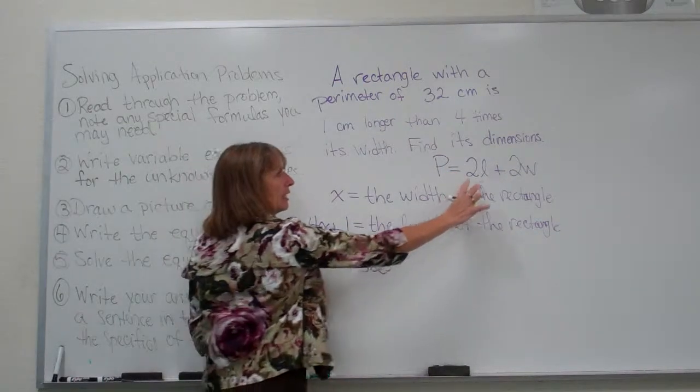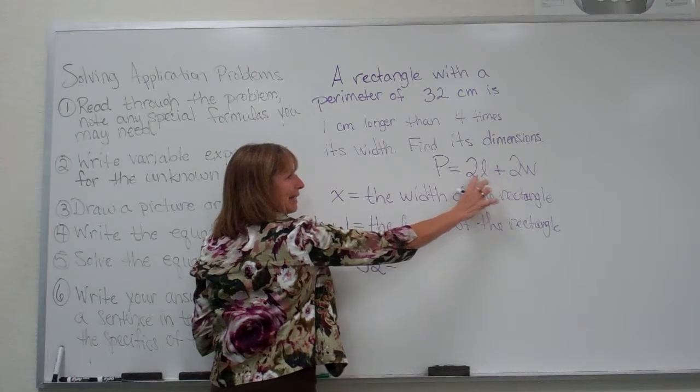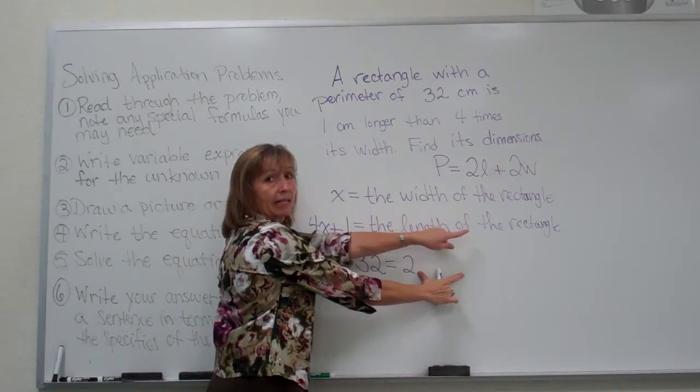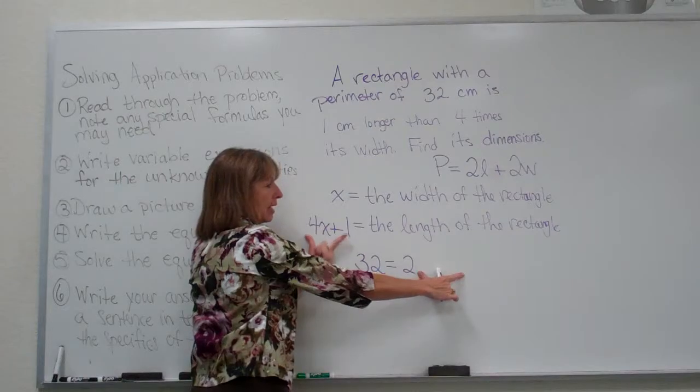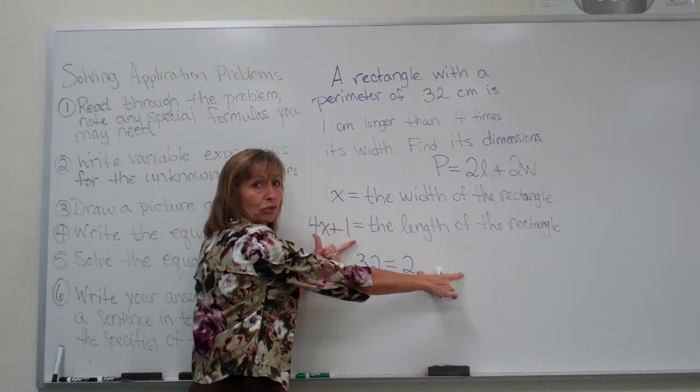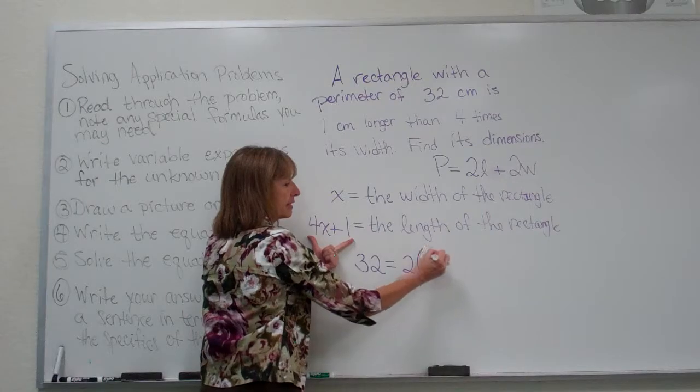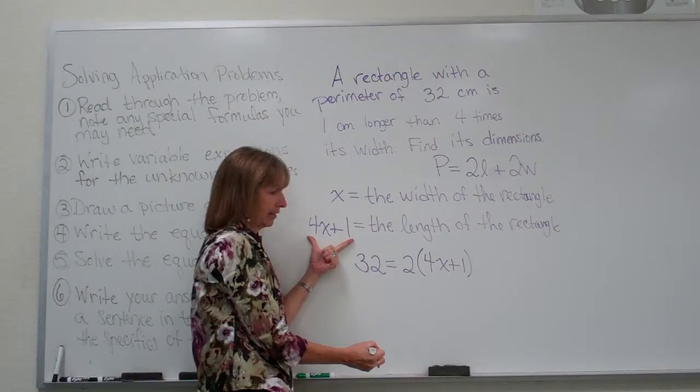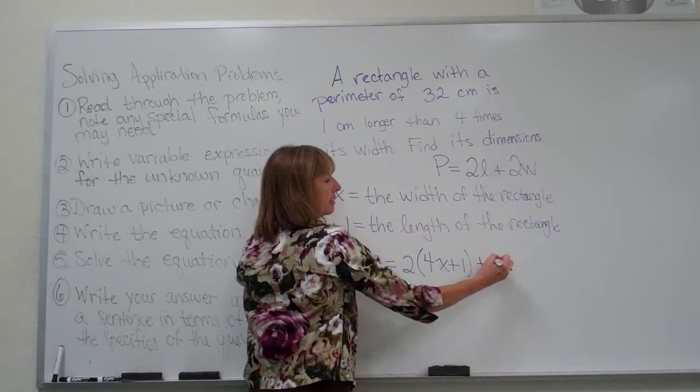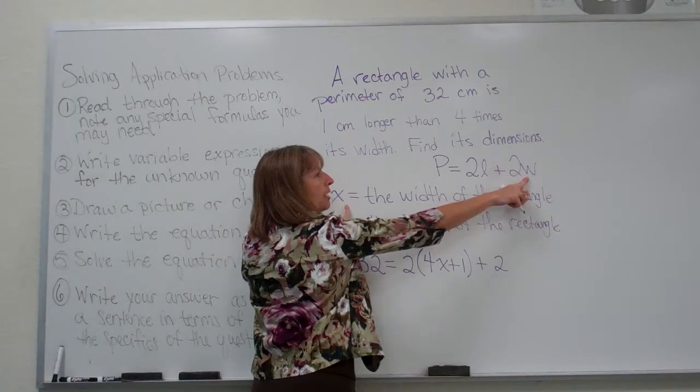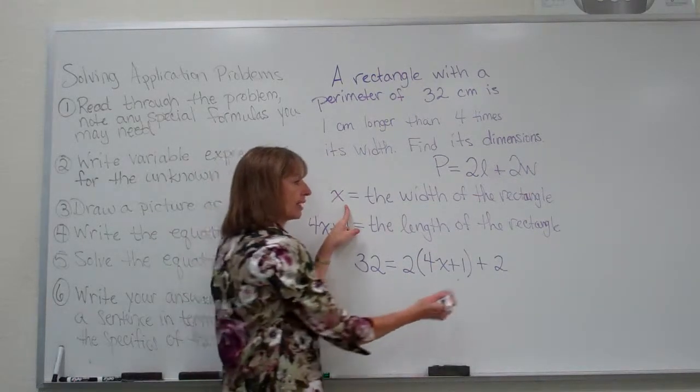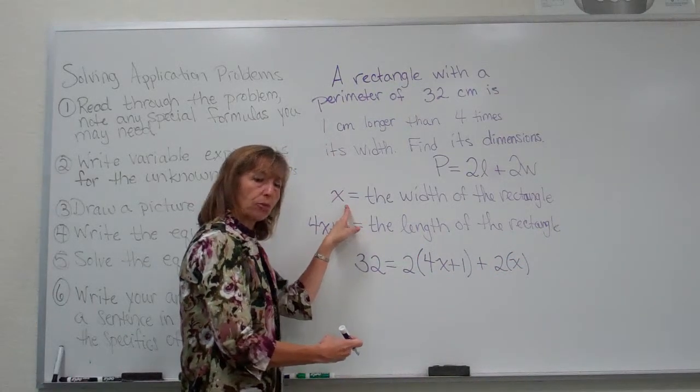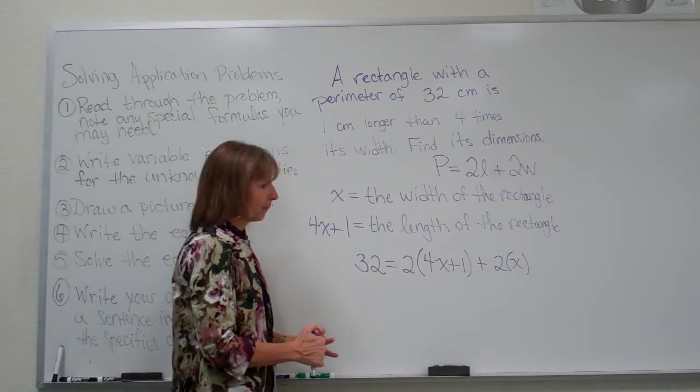Now this is two times the length. So I'm going to write my two. And I'm going to multiply it to the expression of the length that is specific to this problem. But my expression for the length has two terms. So I need to grab that in parentheses to make sure that I apply it to the full expression for the length. And then plus two times the width. But my width is represented by just the letter x. So I can put it in parentheses to show that it's multiplied to the x. But since it's just one term, I could have just written it without parentheses as well.